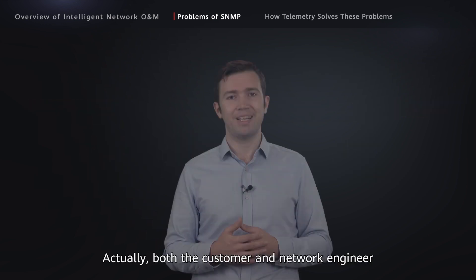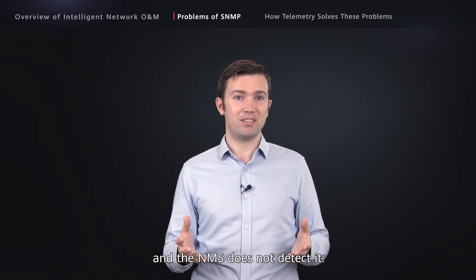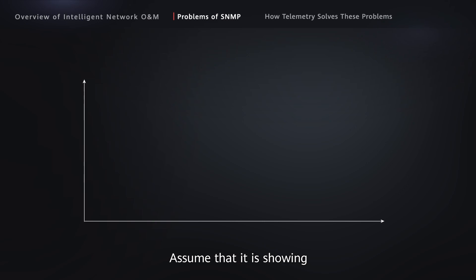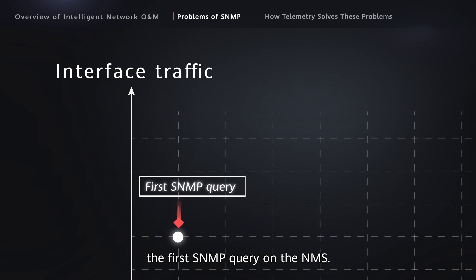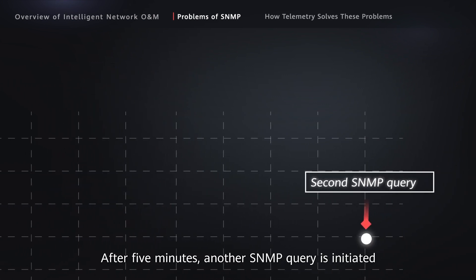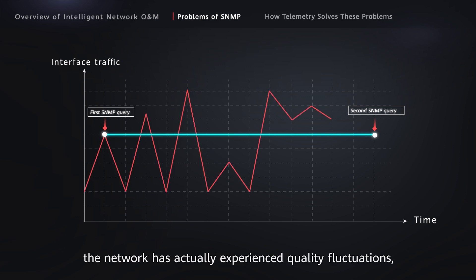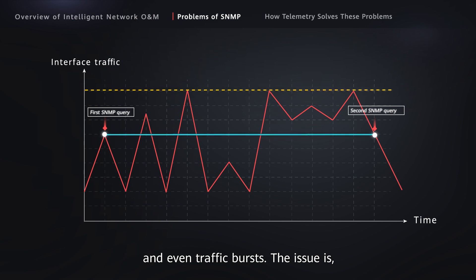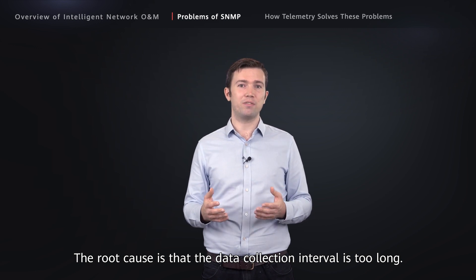Who should be responsible? Actually, both the customer and network engineer are in the right. The network quality does indeed deteriorate and the NMS does not detect it. Let's take a look at this graph. Assume it is showing the interface traffic on a switch. The network is normal upon the first SNMP query, and after five minutes another query shows the network is still normal. However, during these five minutes, the network has actually experienced quality fluctuations and even traffic bursts. The issue is SNMP does not detect the problem. This is why we consider the data collected by SNMP to be inaccurate — the root cause is that the data collection interval is too long.